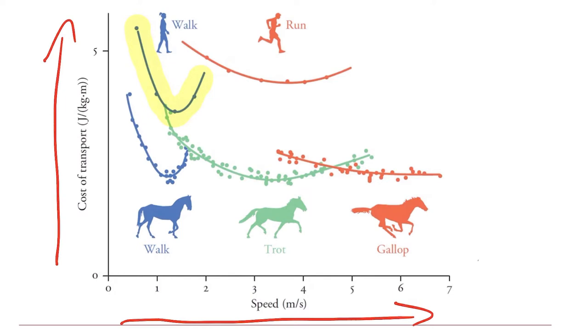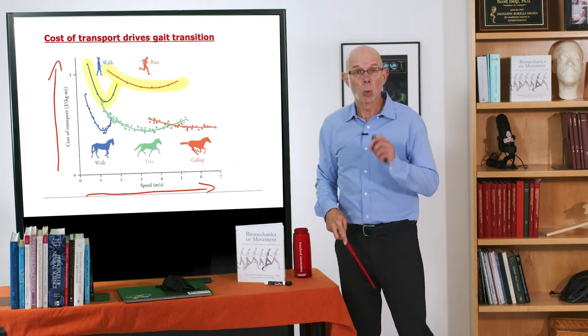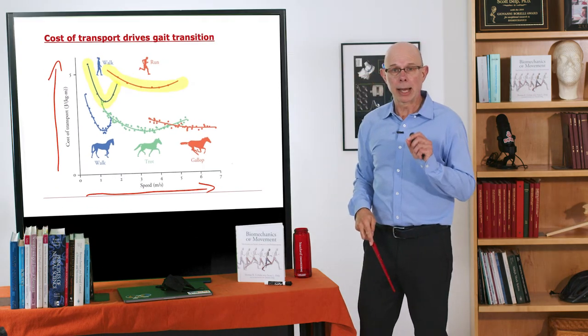When you start to walk a little faster, the energetic cost goes up, and here it is for running. So you can run at a cheaper cost than you could walk. In fact, it would be very hard to even walk at that speed. So one of the drivers is this energetic cost.